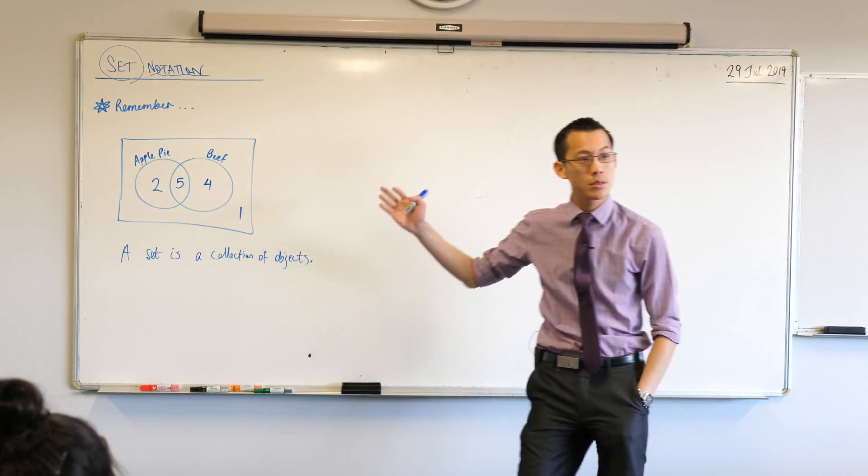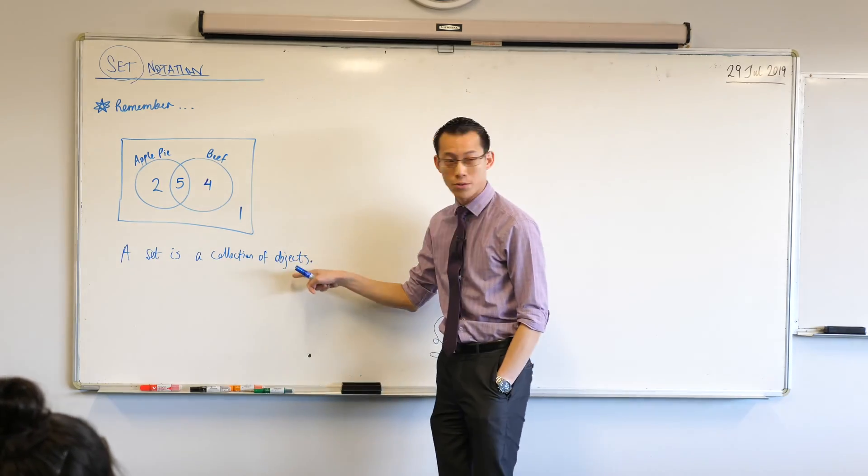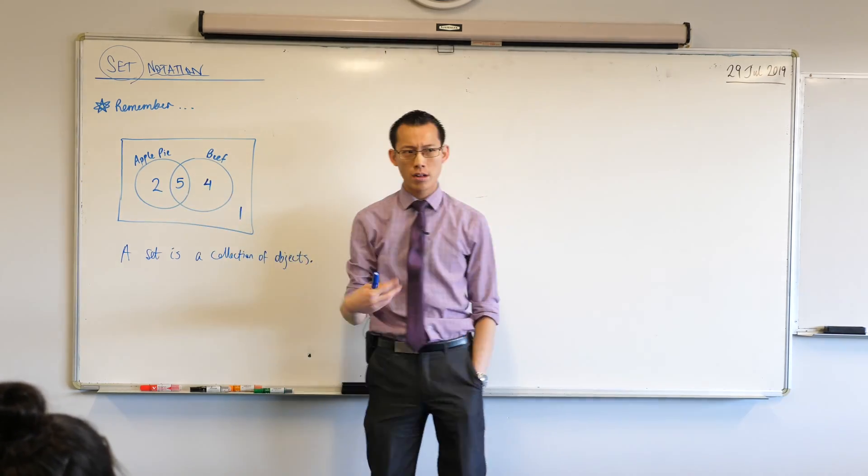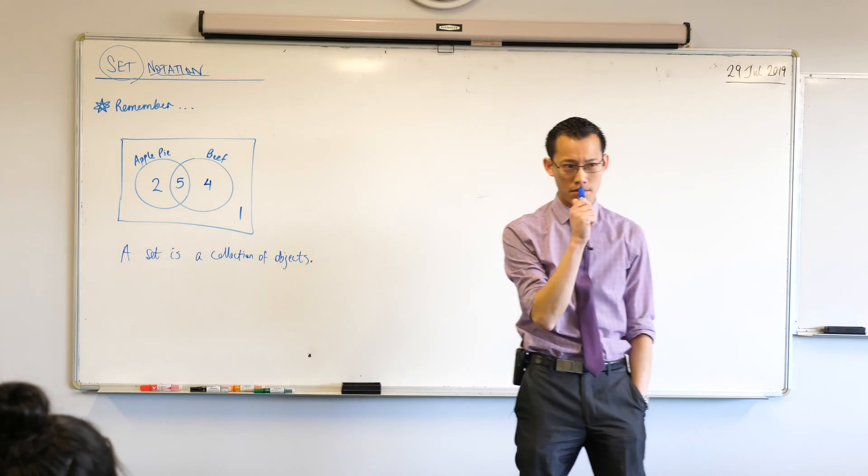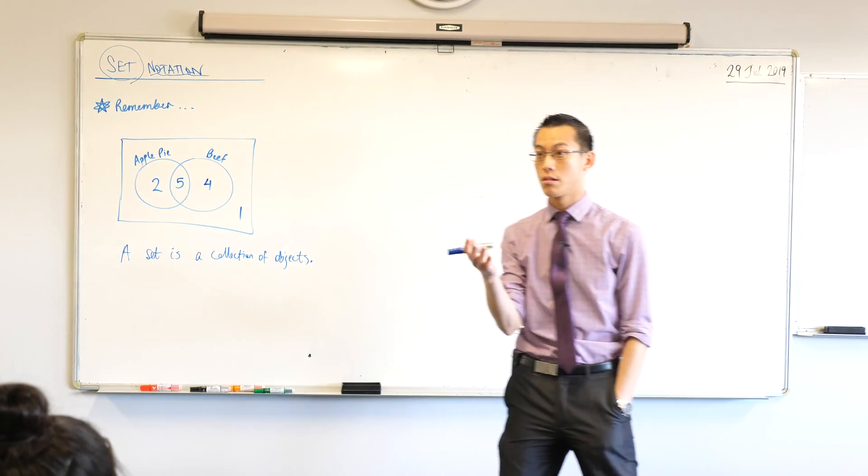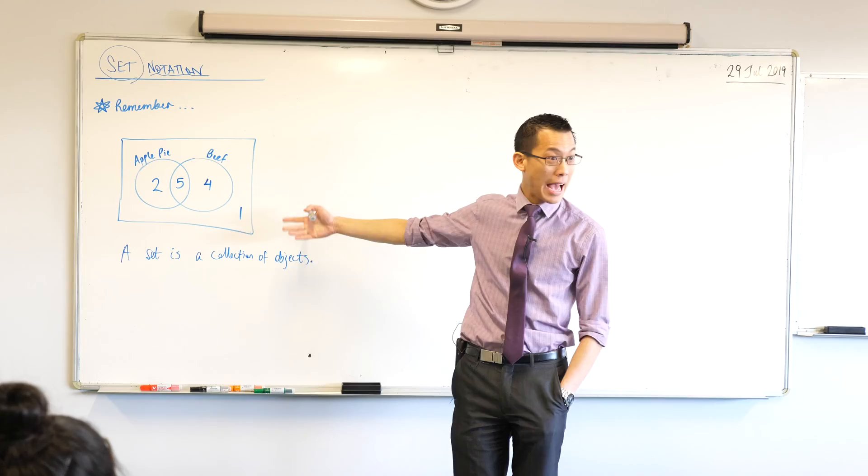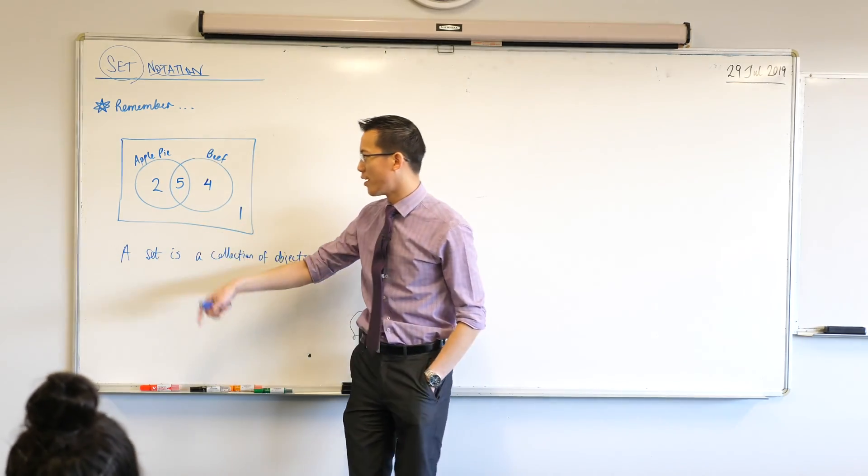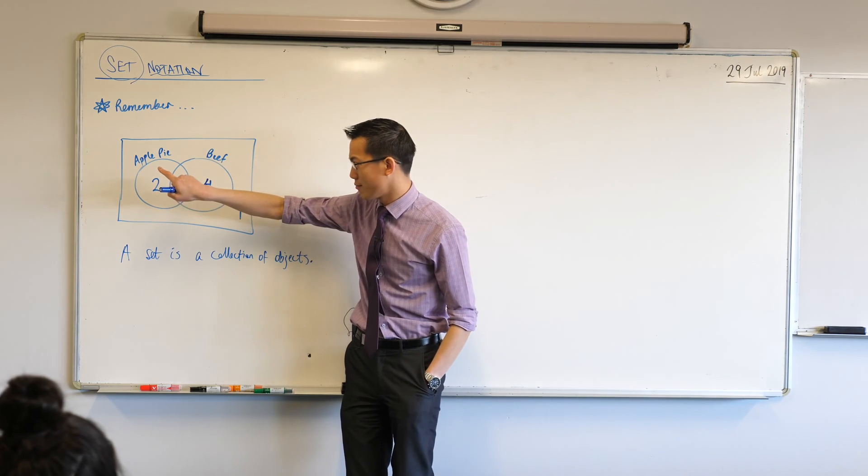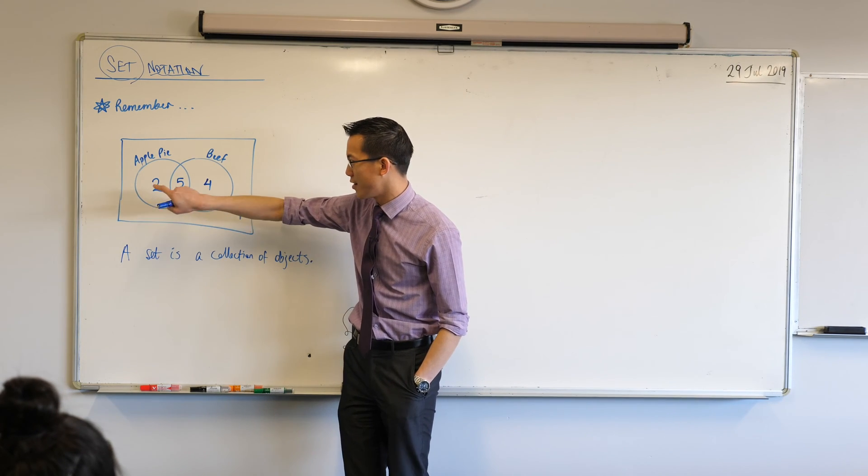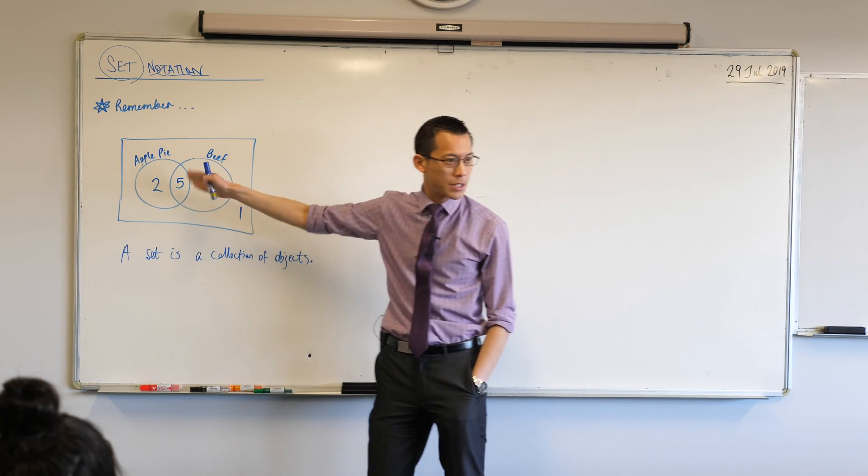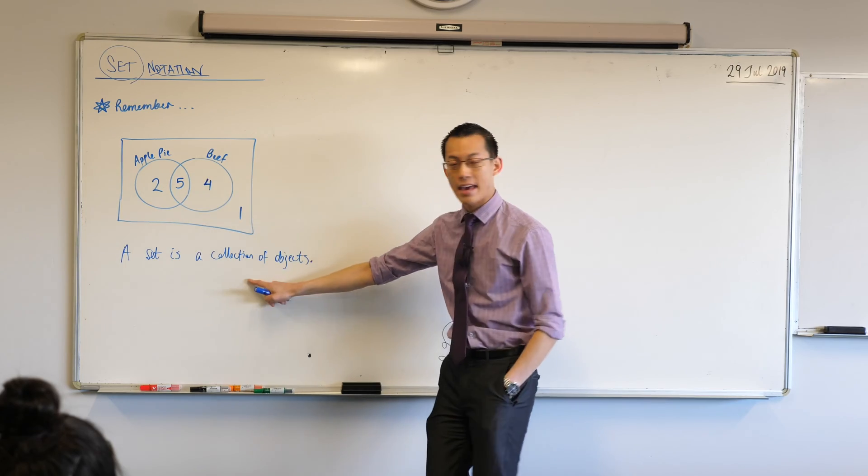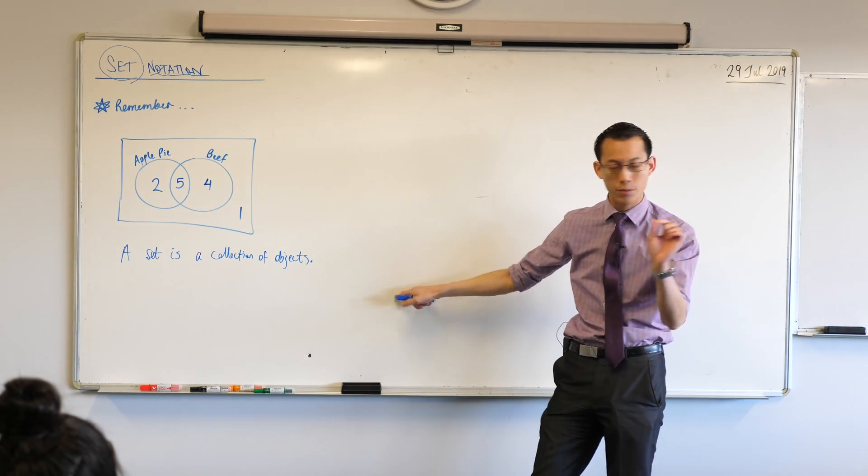For example, have a look at this situation that we had before, right? You've got some sets here, some collections of objects. The two, the five, the four, and the one, what do they represent? They're not numbers in this case. What do they represent? I think I heard it. They represent people, friends, at the banquet, right? So it's like, oh, okay, we've got Aaron, Johnny, and Beth, and all of these people who are in here, right? So they're our collection of objects.